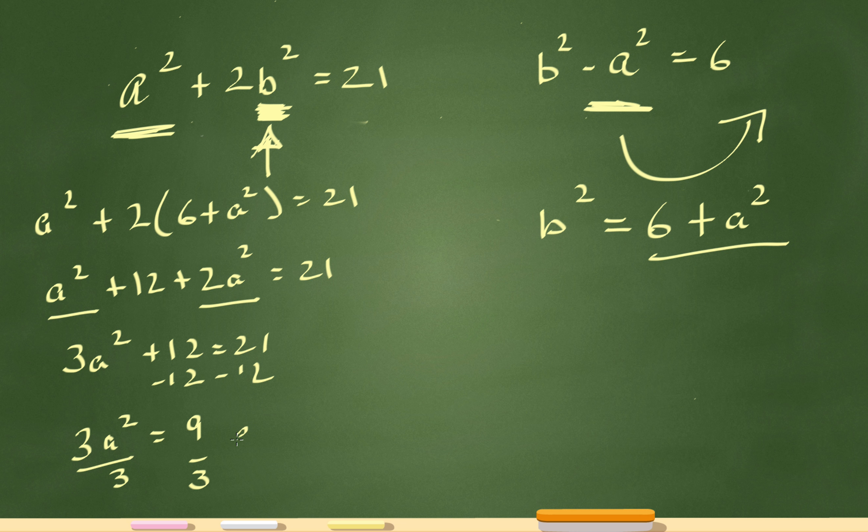Divide both sides by 3. I will have a squared equals 3, and then a will equal square root of 3.